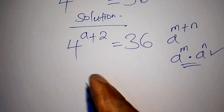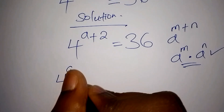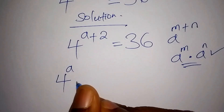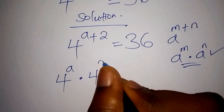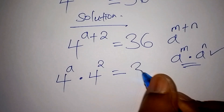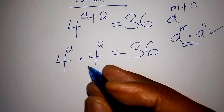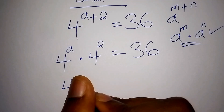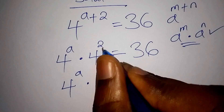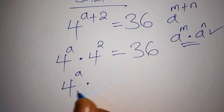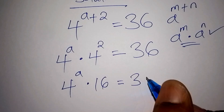So here, 4 to the power of a plus 2 becomes 4 to the power of a multiplied by 4 to the power of 2, which equals 36. Now, 4 to the power of 2 is just 4 multiplied by 4, which is 16. So we have 4 to the power of a multiplied by 16 equals 36.